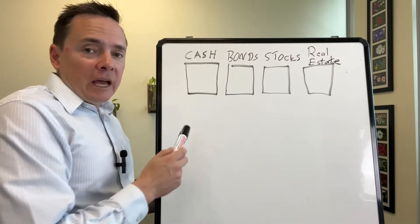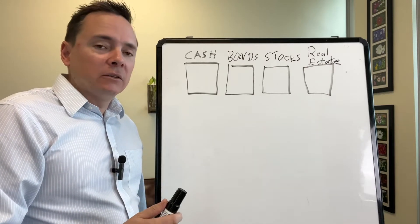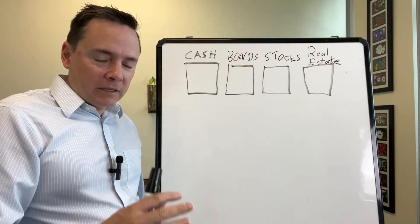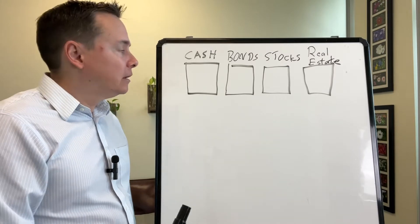Cash would just be a checking account, savings account, CDs — just cash, something you would have at a bank.